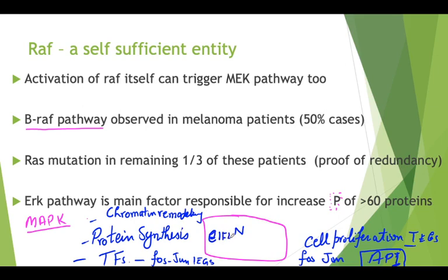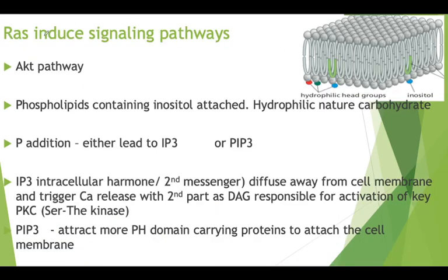For chromatin remodeling, MSK1 is the key element which is phosphorylated, activated, and travels inside the nucleus. So MSK1, EIF4 elongation factor, and FOS/JUN are the elements facilitated by MAP signaling kinase. This completes the first route of the RAS-mediated pathway.